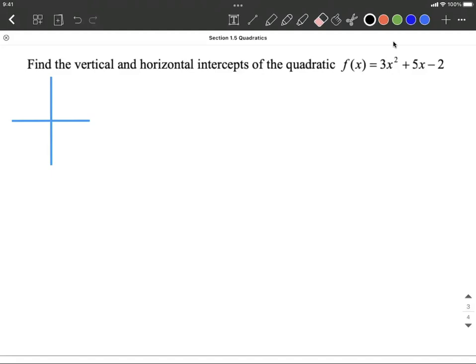When they're saying vertical intercepts, they're asking where does this graph intersect the vertical axis, the y-axis. Another way to say that same thing is vertical intercepts just means the same thing as the y-intercept.